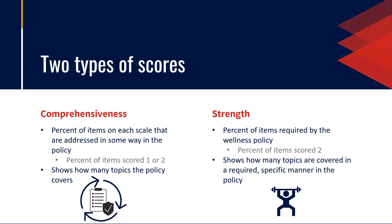The WellSAT produces two scores upon your completion of the assessment: a comprehensiveness score, reflecting the extent to which recommended content areas are covered in the policy, and a strength score, reflecting how strongly the content is stated. Comprehensiveness indicates how many topics the policy covers, while strength indicates how many topics the policy covers with strong, specific language that requires that actions be taken.